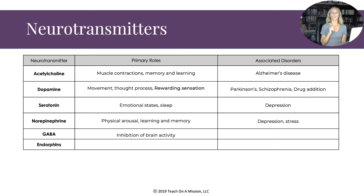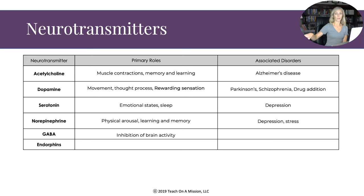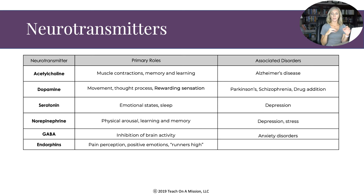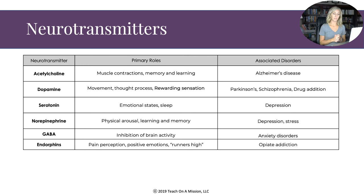GABA works to inhibit brain activity — it's released to suppress neurons that shouldn't be active for a given action. GABA is heavily involved in anxiety disorders. Endorphins are about pain perception: they increase your pain threshold, give positive emotions, and produce what's known as a runner's high. Endorphins are very involved in opiate addiction — opium, morphine, and heroin are all opiate derivatives.